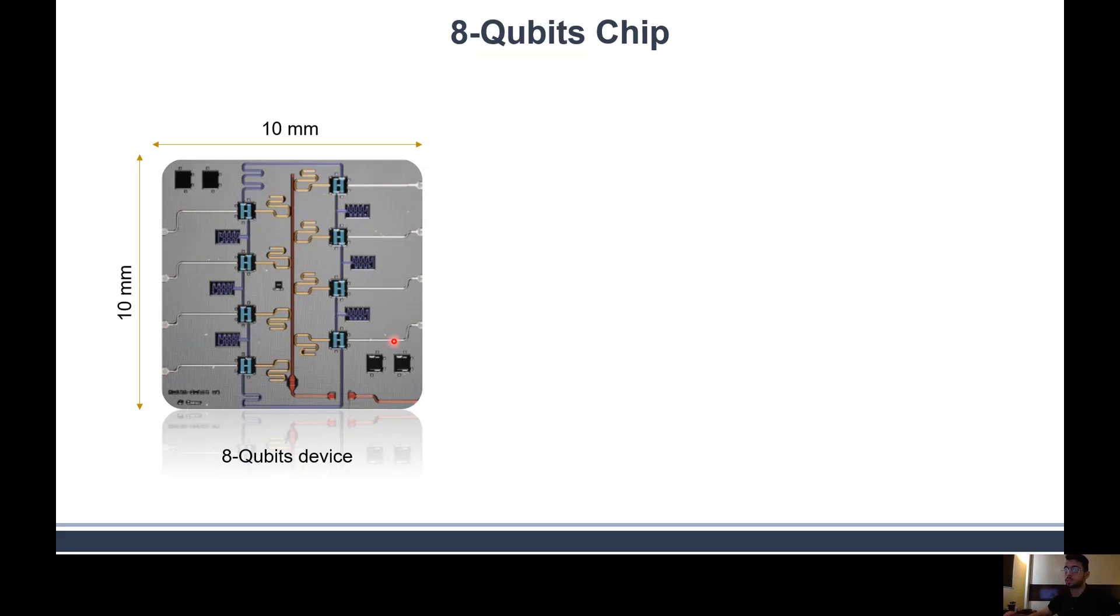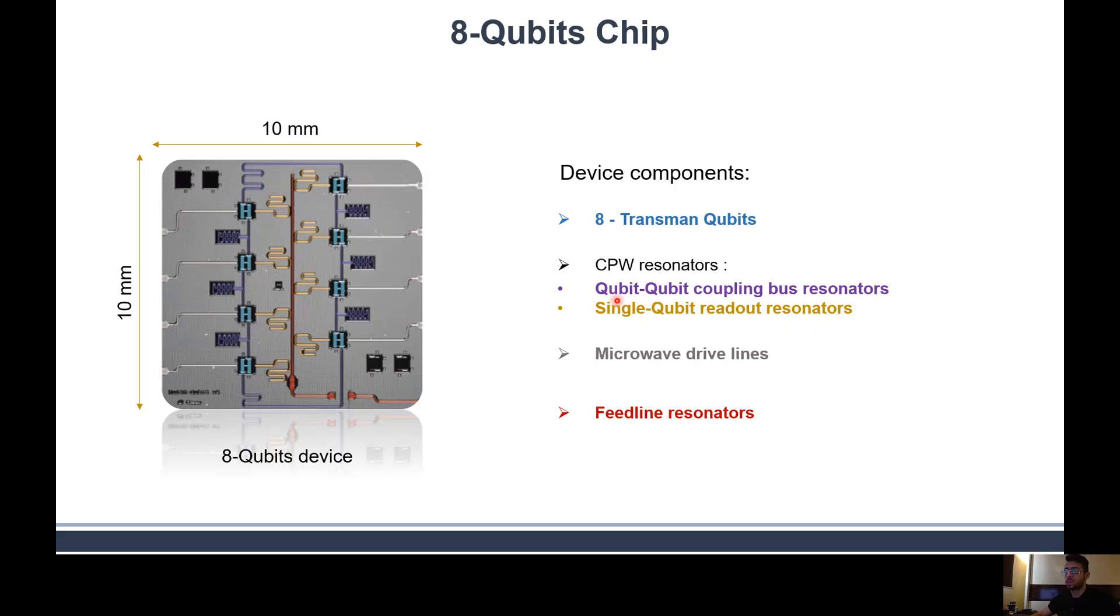Here is an eight qubit chip built with eight transmon qubits and eight CPW readout resonators and other elements. Each of these eight qubits has its reading element, its resonator. In our study we focus only on the resonators because we want to improve their quality factor, and this improvement can be extended to the other elements in the chip.